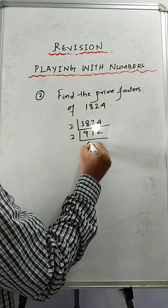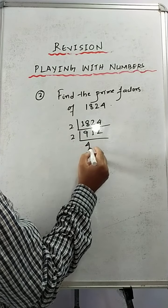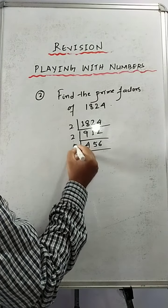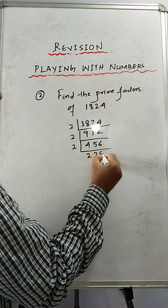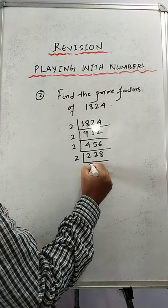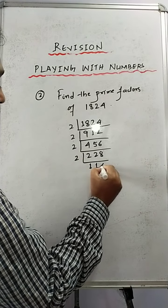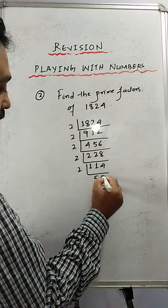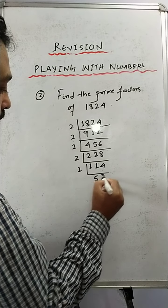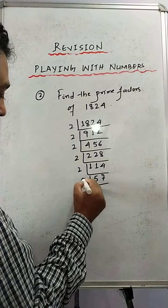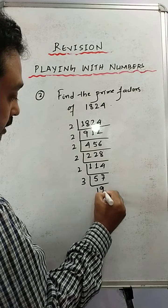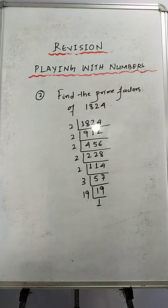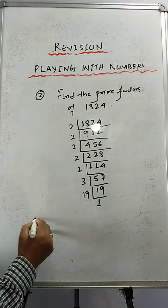It is divisible by 2, again divisible by 2, again divisible by 2, again divisible by 2, giving us 57. Now divisible by 3 — 3 times 19 is 57, and 19 is prime. So now we'll write the prime factors.